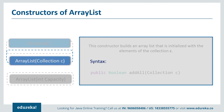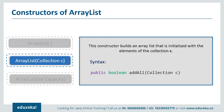The next constructor is ArrayList(Collection c). This constructor is used to add all the elements of a specified collection C to the current ArrayList — that is, you can initialize the ArrayList with all elements from the specified collection.